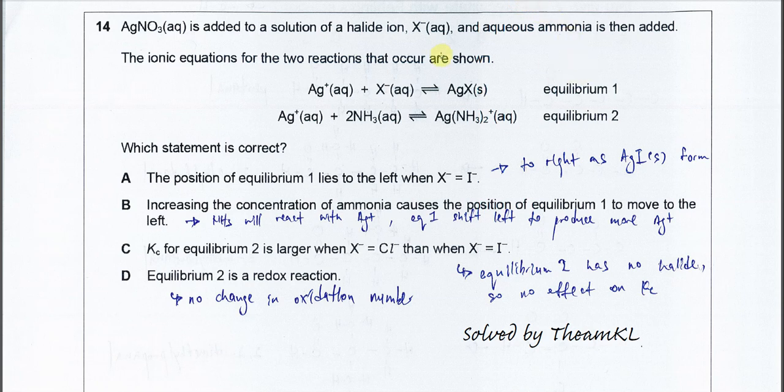This question involves the formation of silver halides and addition of ammonia. It has equilibrium one, the formation of silver halides, and equilibrium two, the formation of the complex ion with silver and ammonia. Which statement is correct? We'll go through them one by one.